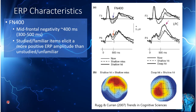Characteristics of the FN400: it's a mid-frontal negativity around 400 milliseconds, with the prototypical window of 300 to 500 milliseconds, though this can shift depending on the study. Studied or familiar items will elicit a more positive ERP amplitude during this window than unstudied or unfamiliar items. For example, the blue arrow here points to the FN400 in the 300–500 millisecond range, where items encoded shallowly and identified as old have a more positive ERP than new items.